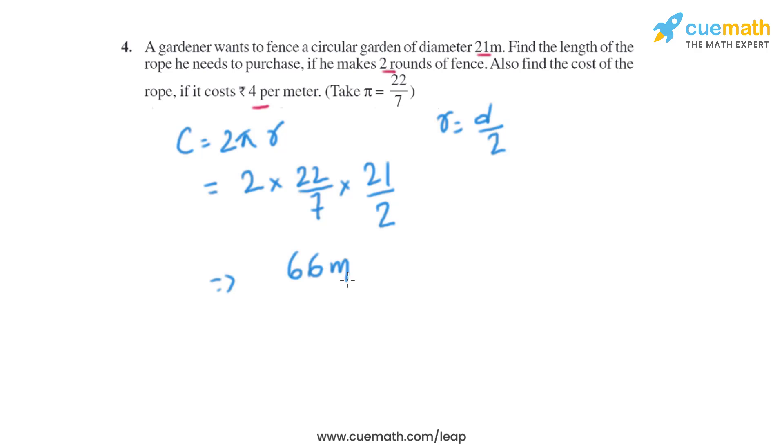That is the circumference of the circle. As the gardener needs to make two rounds of fence, we need to multiply 66 by 2, which will give us 132 meters. So 132 meters is the length of the rope the gardener needs.